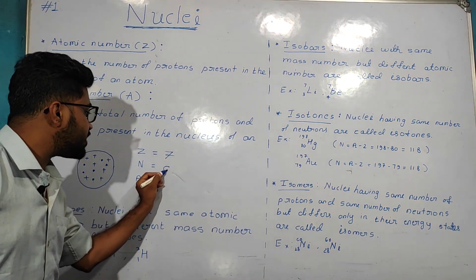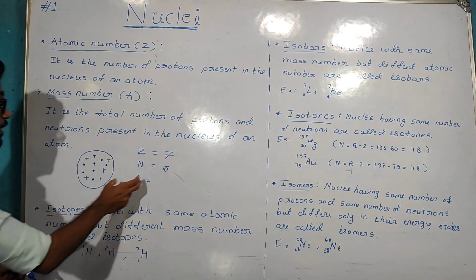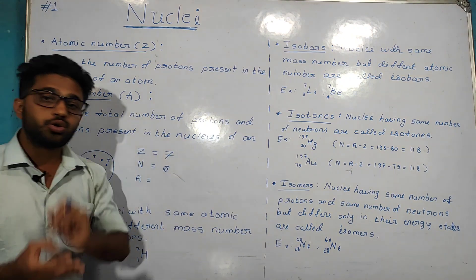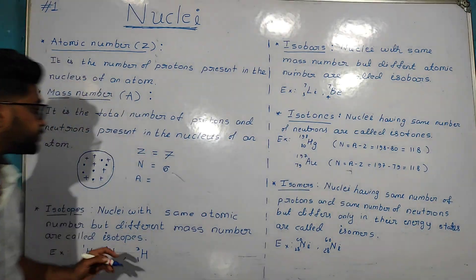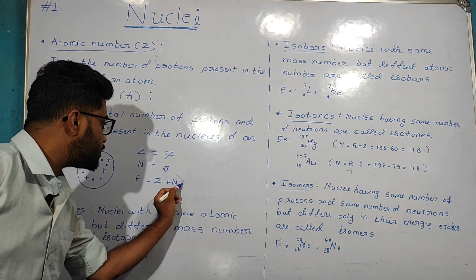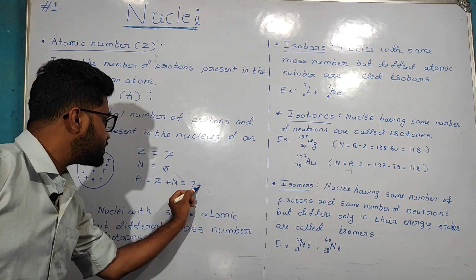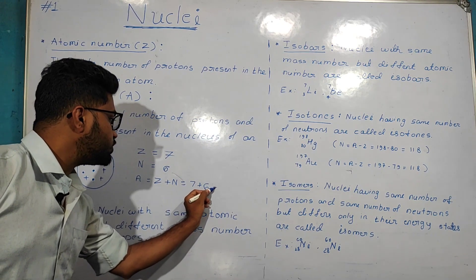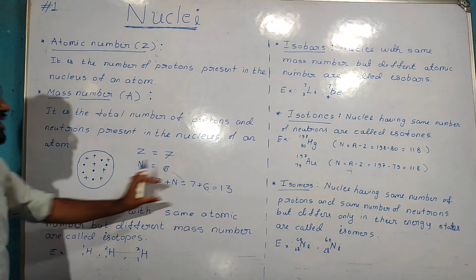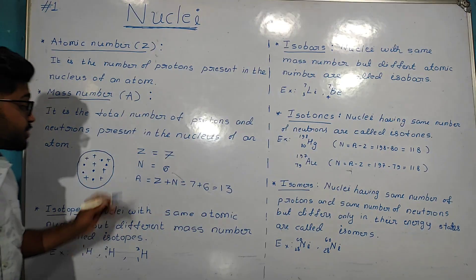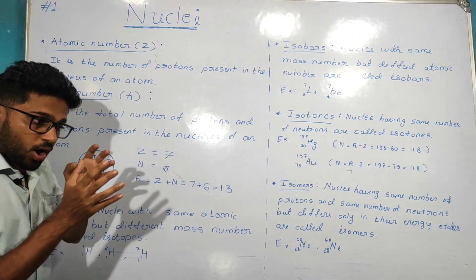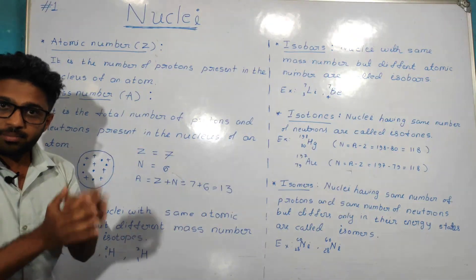There are a total of 6 neutrons. So mass number is the total number of protons and neutrons present in the nucleus. A is equal to Z plus N, which is equal to 7 plus 6, which equals 13. So the mass number is 13. Mass number is the sum of the atomic number and the number of neutrons present in the nucleus.